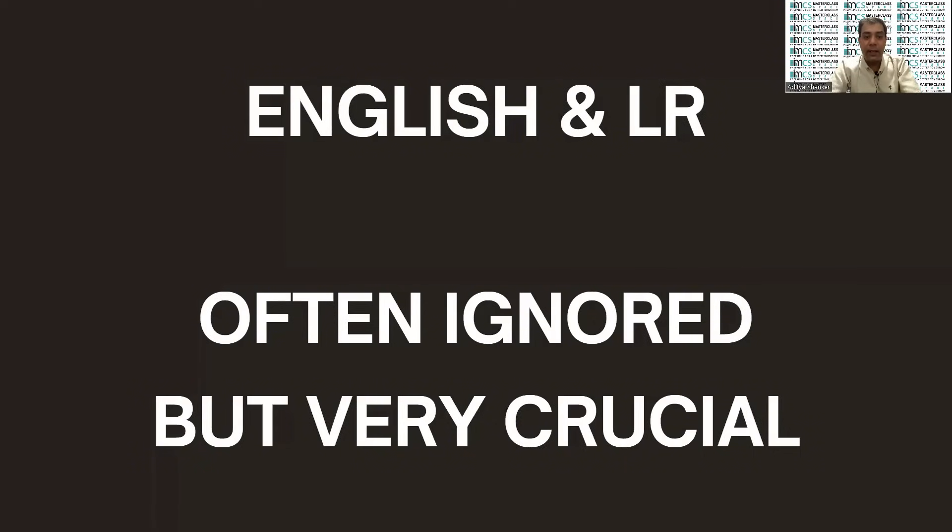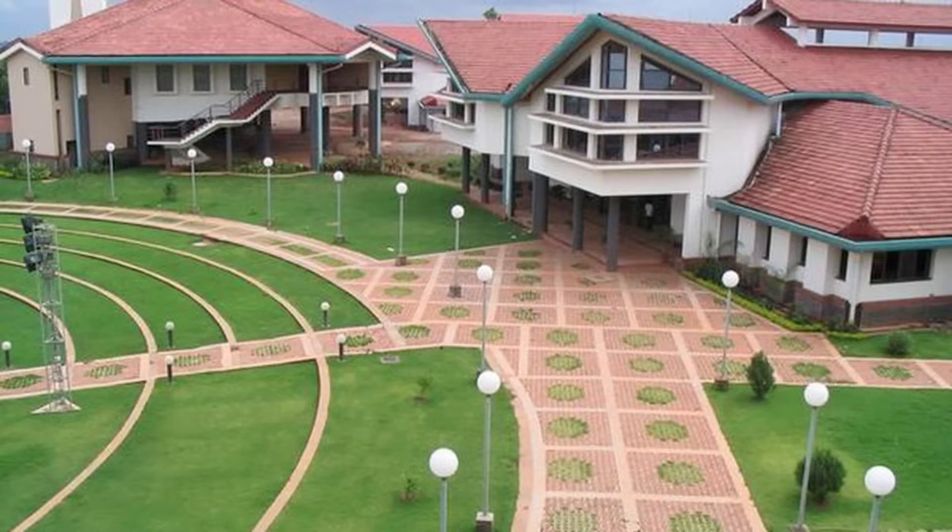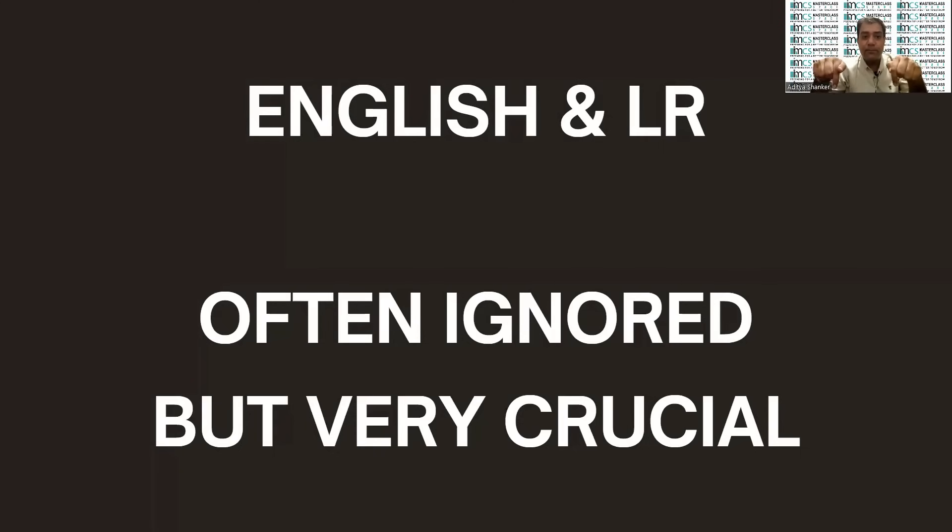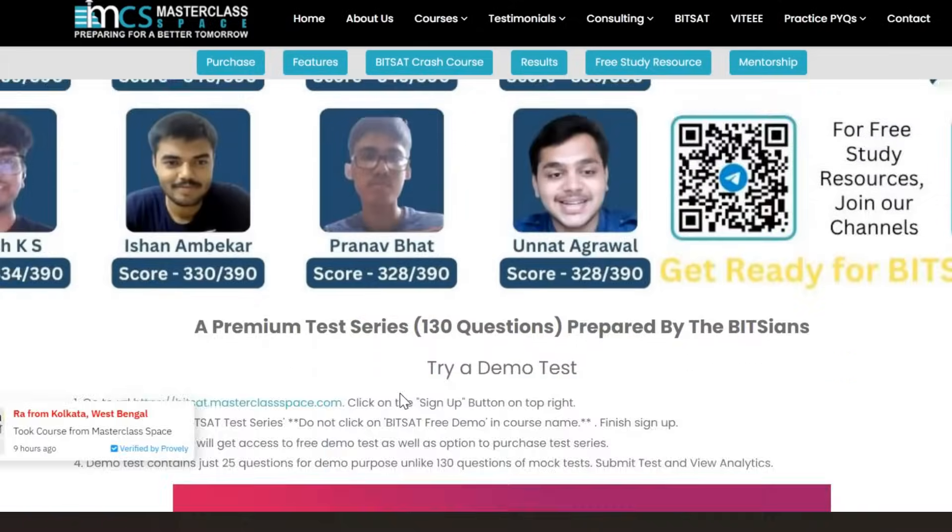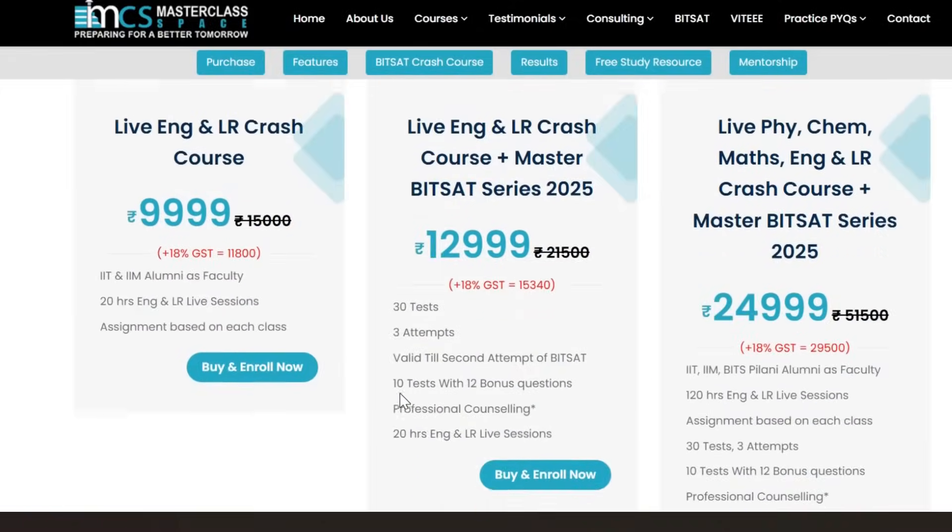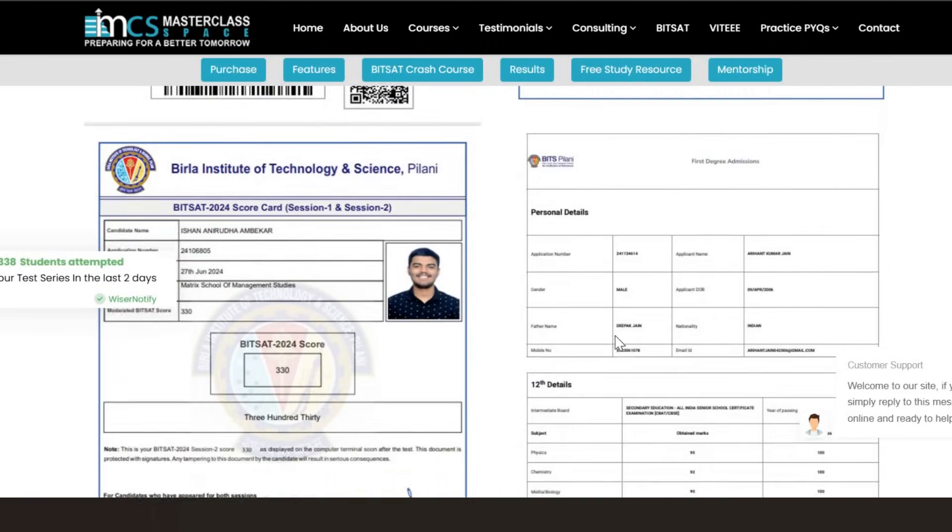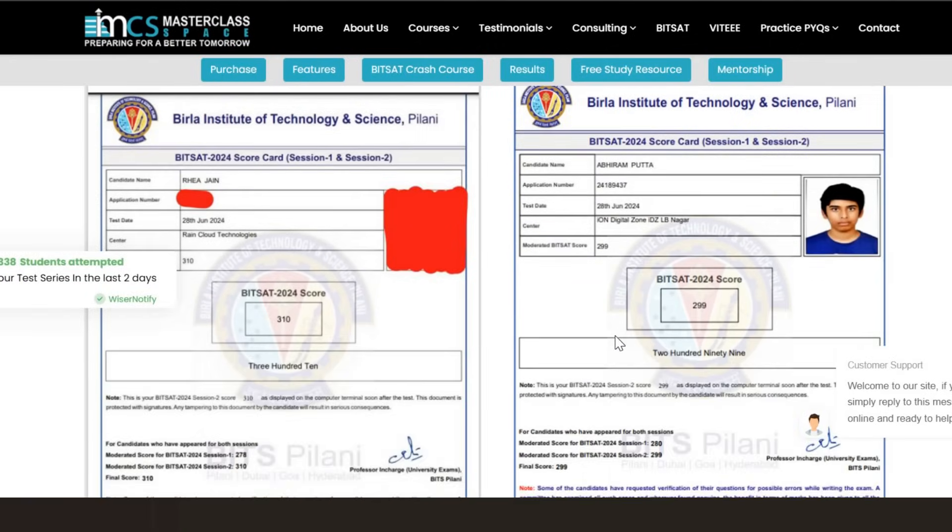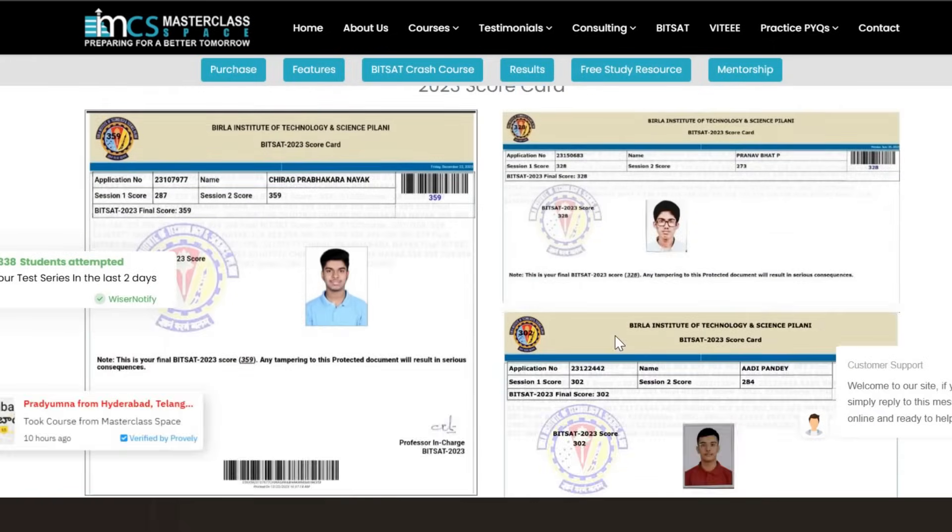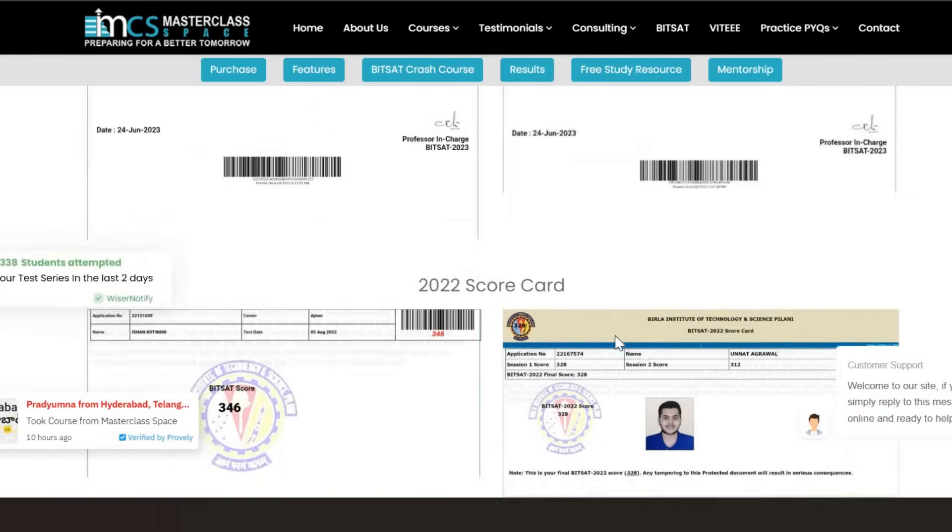So you should not ignore English and logical reasoning. MasterClass Space is offering crash course for English and logical reasoning. They are being taught by the experts from IIM Kozikode and IIT Delhi. The links are given in the description. You can join our crash course to prepare for English and logical reasoning, and many students who have joined are giving very good feedback. In the past also students have got much benefited from this crash course.